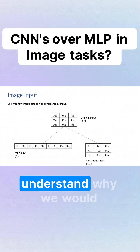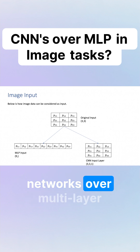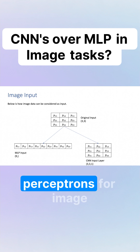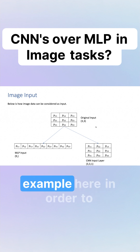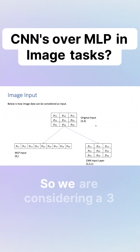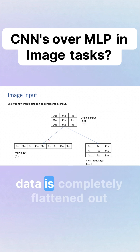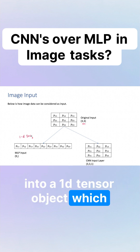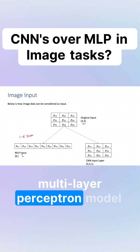In this short video, let's try to understand why we would require convolutional neural networks over multilayer perceptrons for image processing or recognition tasks. We are considering a simple example here in order to understand it a little better. So we are considering a 3x3 input image data, and this 3x3 input image data is completely flattened out into a 1D tensor object which acts as an input for your multilayer perceptron model.